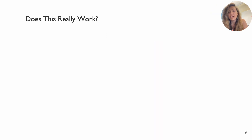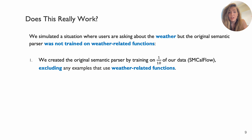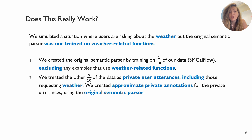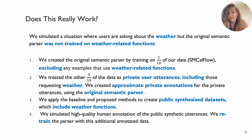To test whether this really works, we simulate a setup where we are trying to add new functionality — specifically weather-related functionality — that does not exist within the existing semantic parser. We take one tenth of the SM CalFlow dataset, train a low-resource semantic parser on it, and exclude all conversation turns that use weather-related functions. The remaining nine tenths of the data serves as private user utterances that do include weather functions, annotated with the low-resource imperfect parser. We apply both the baseline methods and our proposed method to create synthesized datasets, annotate them with a high-resource parser adding weather-related functions, and retrain the low-resource parser with this newly annotated data.